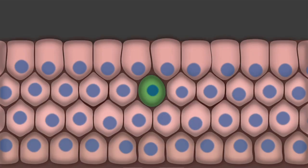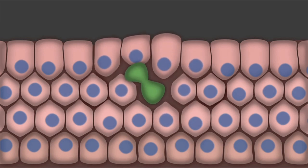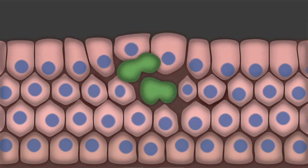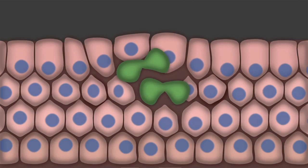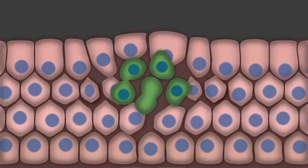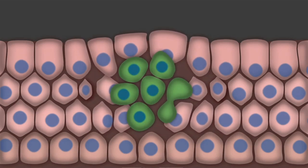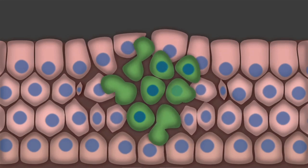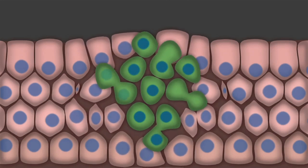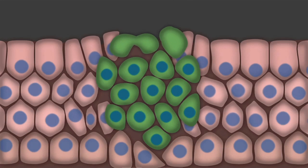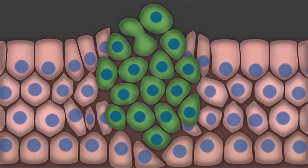Cancerous cells, on the other hand, divide uncontrollably. Here a cancerous cell, colored green, starts to divide and it keeps dividing. The rapidly dividing cells push aside the healthy cells around them. They form a small cancer that at first is too small to see and then begins to grow beyond the organ where it started.